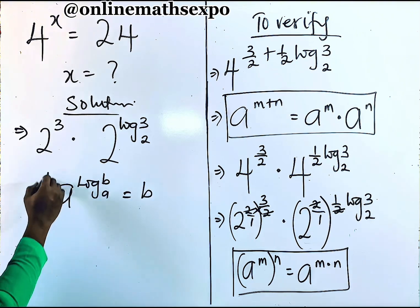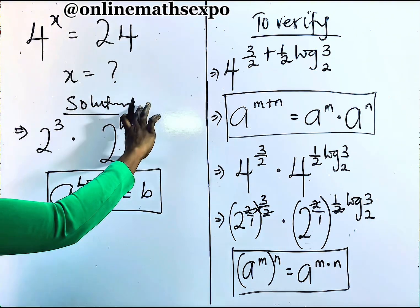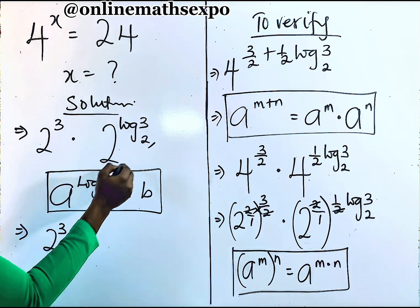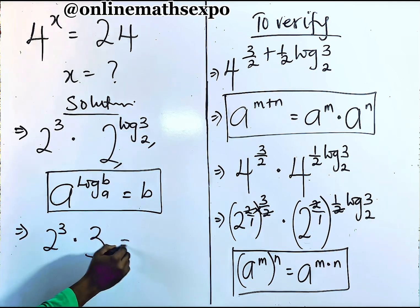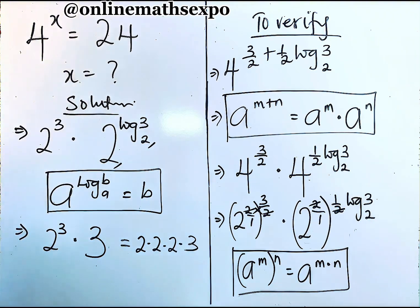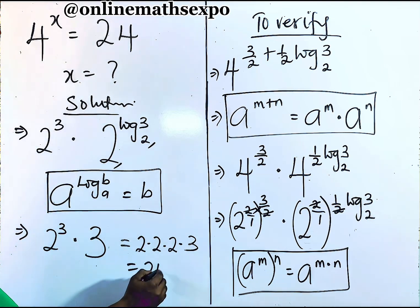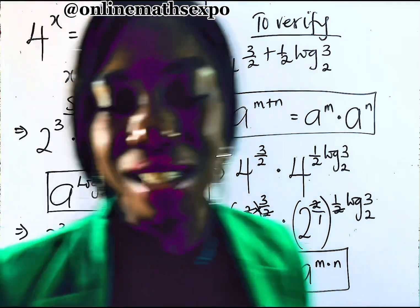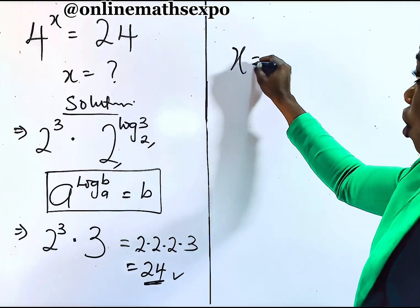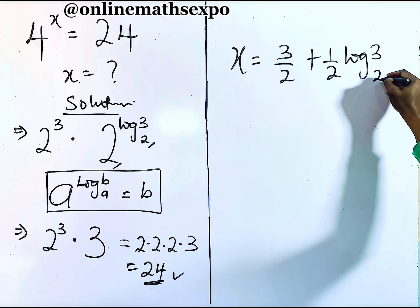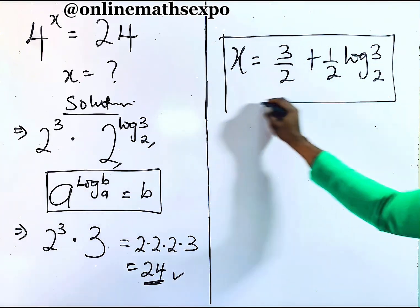So we have 2 cubed multiplied by 3. And 2 cubed is 8, and 8 times 3 gives us 24. That is exactly what we have on the right side. So it means that the value of x we got as 3/2 plus one-half of log 3 base 2 is absolutely correct.